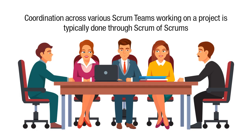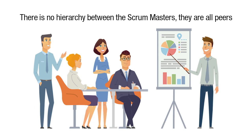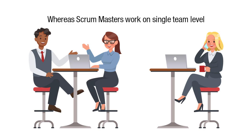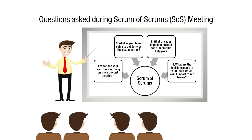Coordination across various Scrum teams working on a project is typically done through the Scrum of Scrums. There is no hierarchy between the Scrum masters; they are all peers. The Chief Scrum Master just works on a multi-team level, whereas the Scrum masters work on a single-team level. The following figure provides questions that are asked during a Scrum of Scrums, or SOS, meeting: 1. What has your team been working on since the last meeting? 2. What is your team going to get done by the next meeting? 3. What are your impediments and can other teams help you? 4. What are the decisions made in your team which could impact other teams?